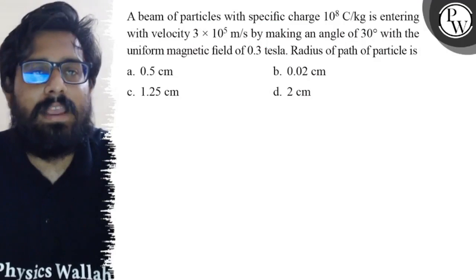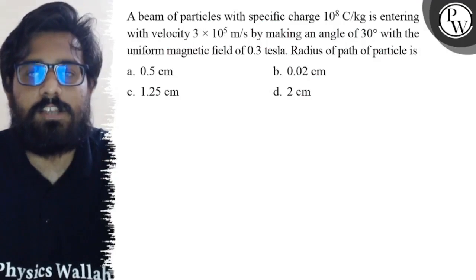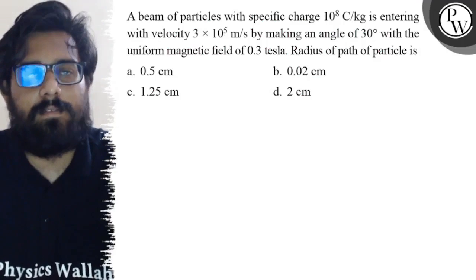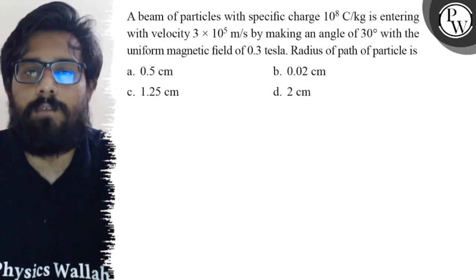Hello viewers, let's see the question. A beam of particles with specific charge of 10^8 coulomb per kg is entering with a velocity of 3×10^5 meter per second.